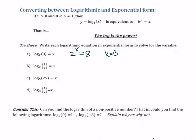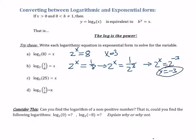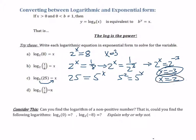How about this: 2 to the x equals 1/8. We rewrite it in exponential form and ask what we put in for x to get 1/8. Since 8 is 2 to the 3rd and it's in the denominator, we can say this is 2 to the negative 3rd, so x is negative 3. Similarly, log base 5 of 25: 25 equals 5 to the x, and we know 5 squared is 25, so x is 2.